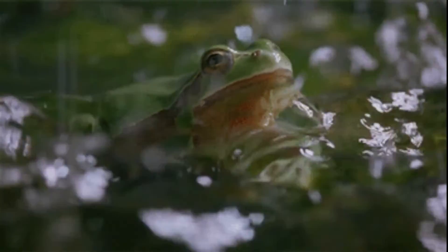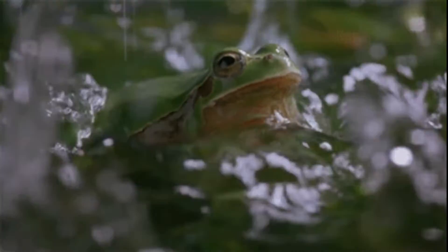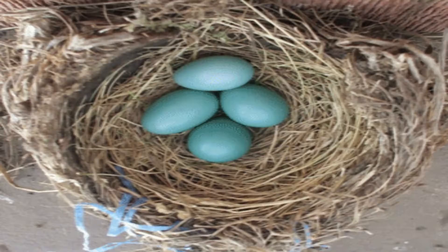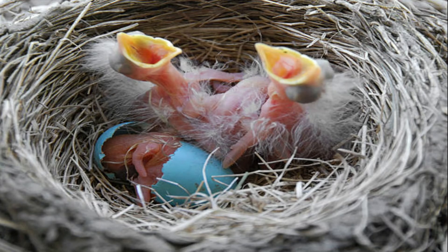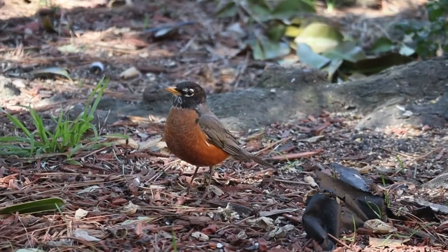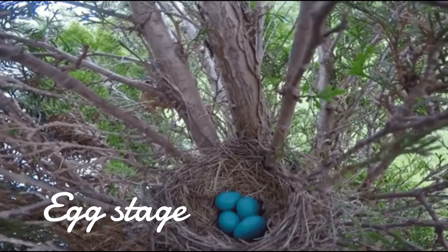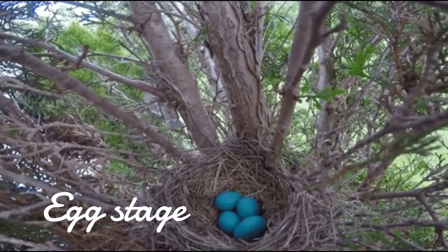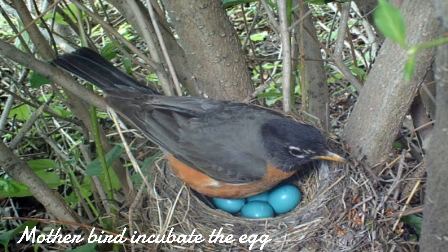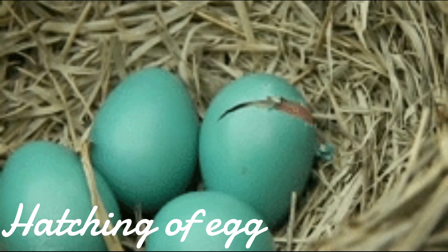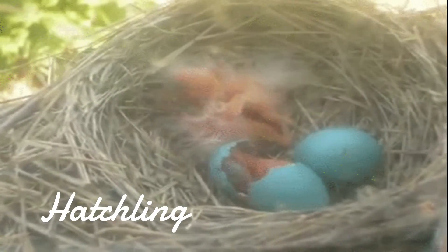The life cycle of birds includes egg, hatchling, chick, and finally the adult bird. Adult birds lay eggs, and after laying, the mother bird incubates them until the hatchlings come out.